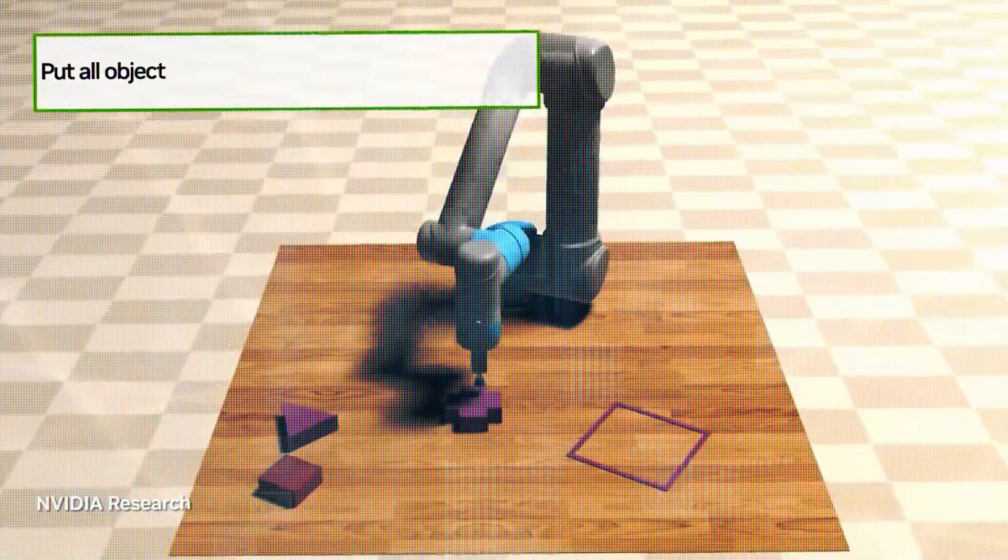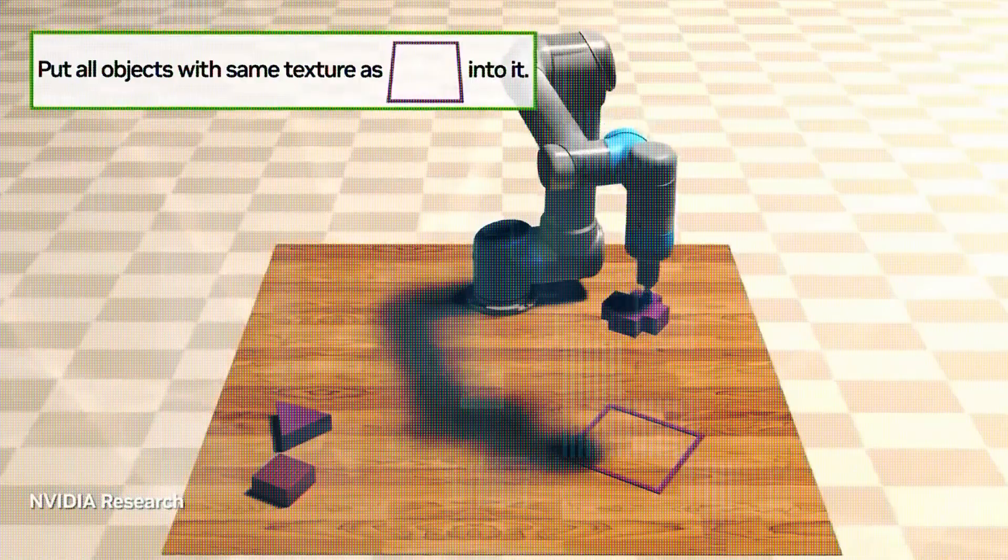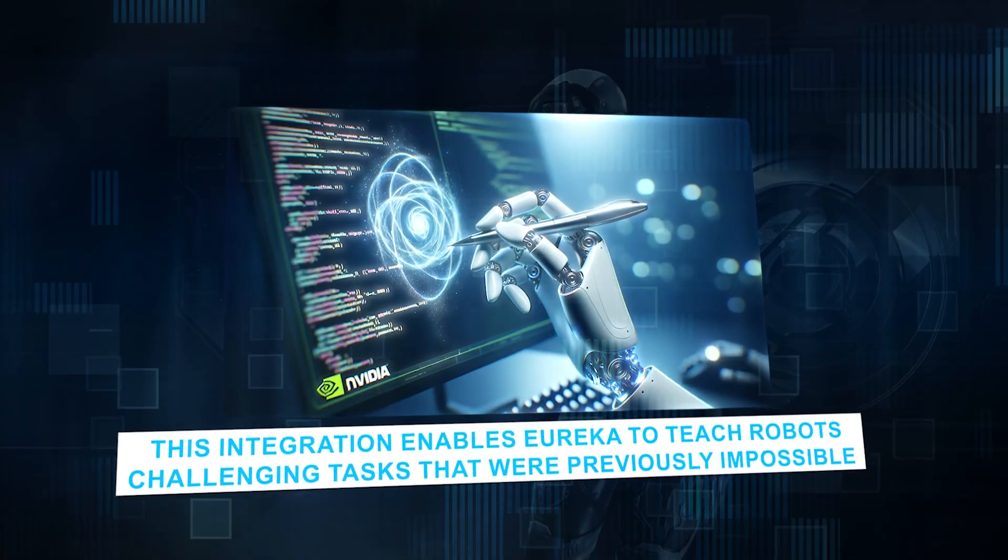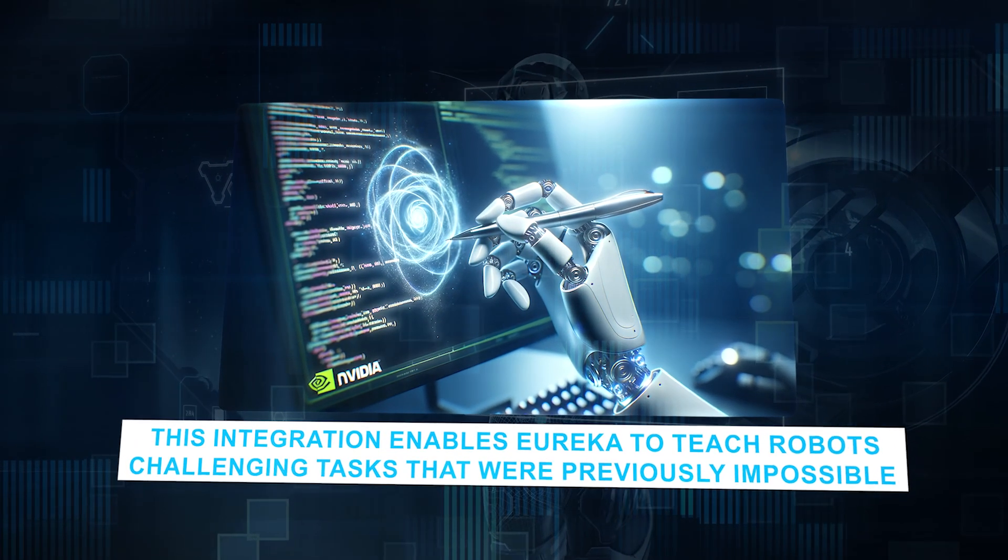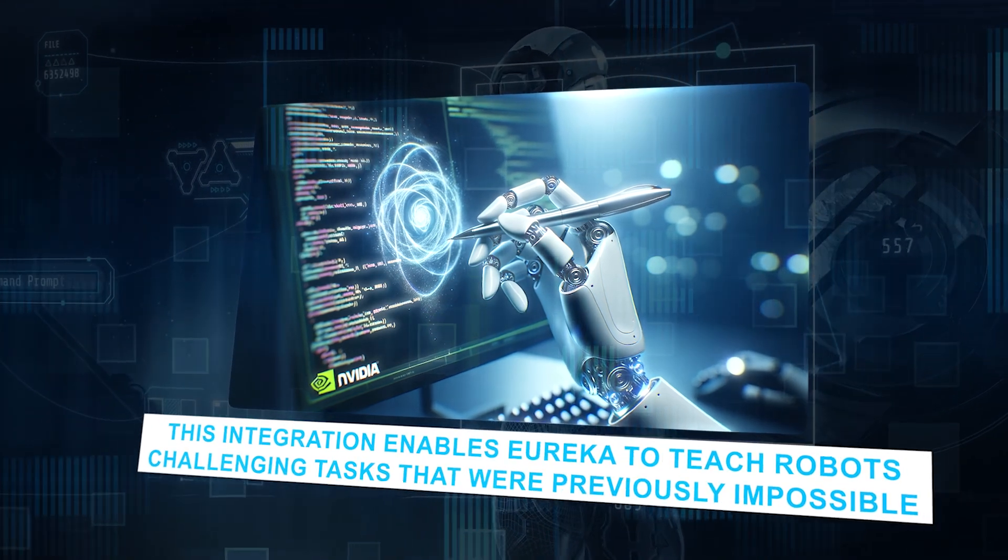What makes Eureka unique is that it combines generative and reinforcement learning methods. This integration enables Eureka to teach robots challenging tasks that were previously impossible.